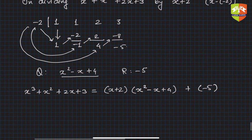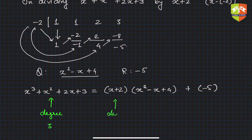Checking the degrees here: the dividend has degree 3, the divisor has degree 1, and the quotient x² - x + 4 has degree 2. Again, 3 equals 1 plus 2 — confirming the same relationship.